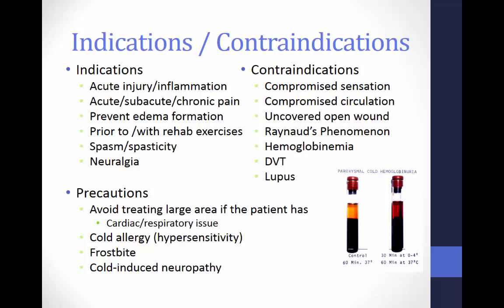For every modality, we need to understand the indications, precautions, and contraindications. An indication is a sign or symptom that indicates a certain intervention may be used — it specifies a positive relationship for the use of that particular treatment. Indications for the use of cryotherapy include acute injury or inflammation, acute, subacute, or chronic pain, prevention of edema formation, prior to or with rehabilitation exercises, muscle spasm or spasticity, and neuralgia.